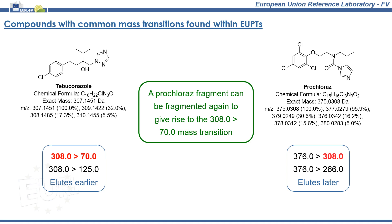The second case of common mass transitions found in a EUPT was the pair tebuconazole and prochloraz. In this case, a fragment of prochloraz fragments in an analogous way to tebuconazole, resulting in an interference for the 308 to 70 mass transition. Tebuconazole elutes earlier, so using the exclusive mass transition and the retention times, correct identification should be possible in all cases.